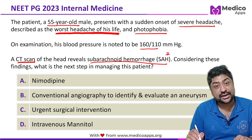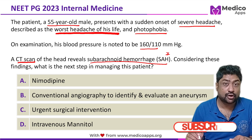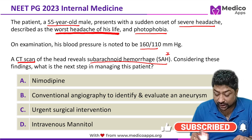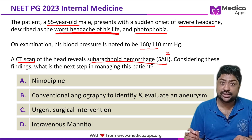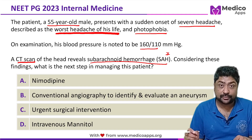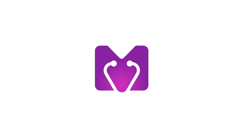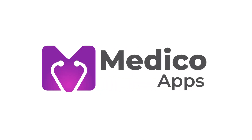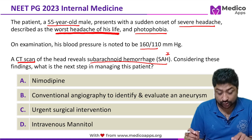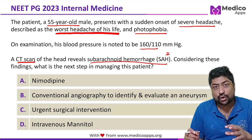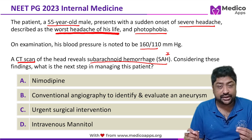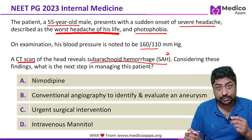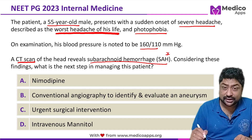Considering these findings, what is the next step in management? The options are: A) nimodipine, B) conventional angiography to identify and evaluate an aneurysm, C) urgent surgical intervention, and D) IV mannitol. This is a very good question because all the options are very close to each other, so we will evaluate each option to arrive at the right answer.